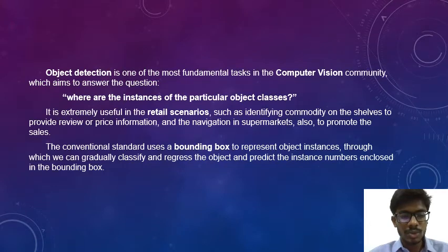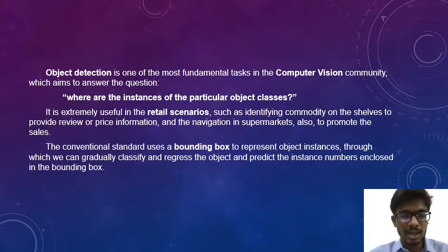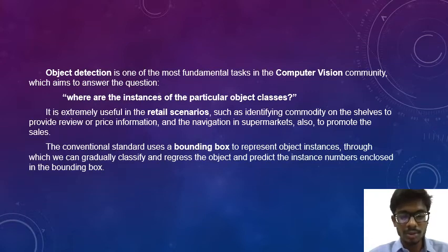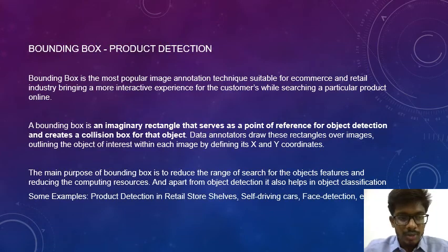Object detection is one of the most fundamental tasks in the computer vision community, which aims to answer the question: where are the instances of particular object classes? It is extremely useful in retail scenarios such as identifying commodities on the shelves to provide review or price information, and for navigation in supermarkets, also to promote sales. The conventional standard uses a bounding box to represent object instances, through which we can classify and regress the object and predict the instance numbers enclosed in the bounding box.